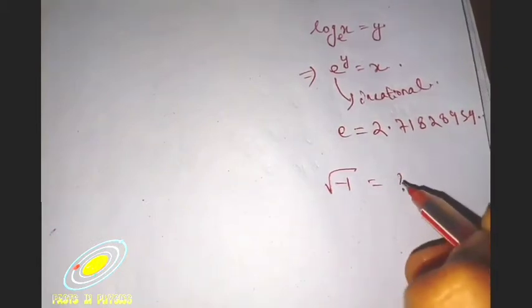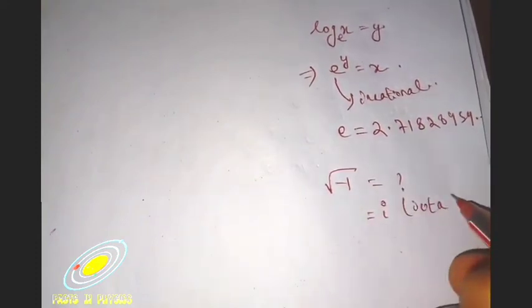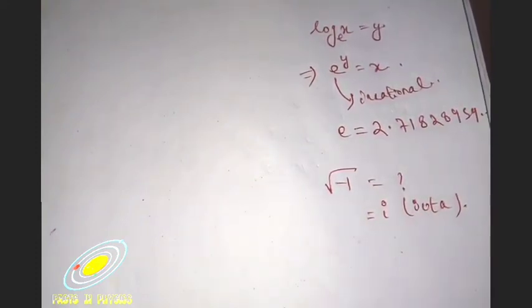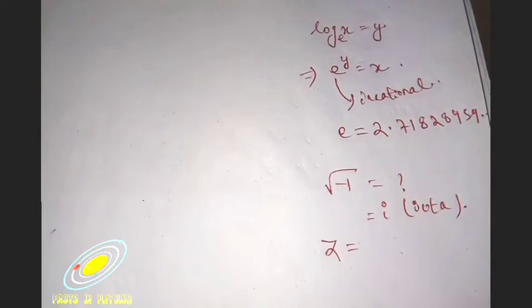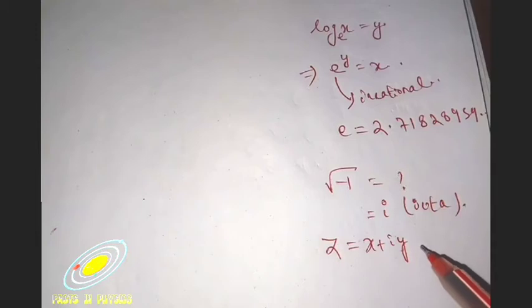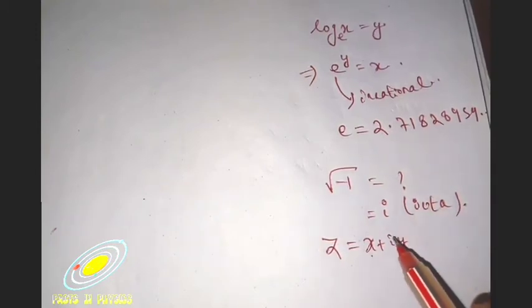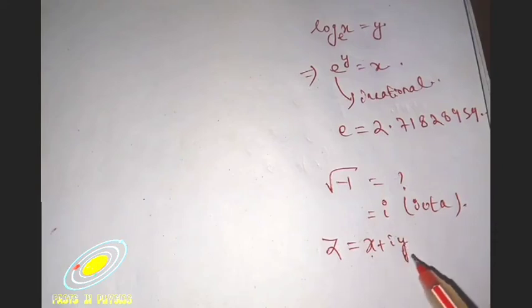This complex is taken as i, which is called iota. The iota is a way to represent a complex number. So if we want to represent a complex number z, then we can write z equals x plus i y, which is a complex number in which x and y are both real numbers and i is the complex one. This is the formation of a complex number.